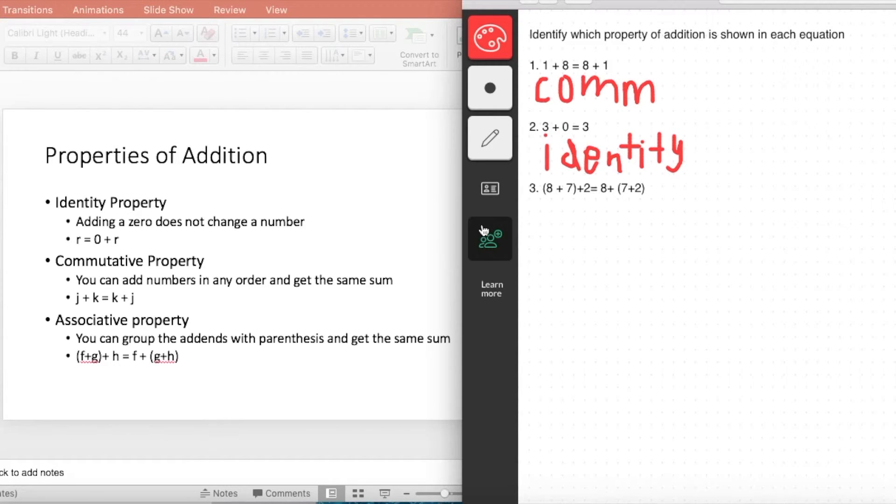Let's look at example three. (8 + 7) + 2 equals 8 + (7 + 2). So you would get 15 + 2 = 8 + 9.